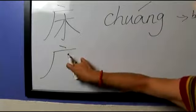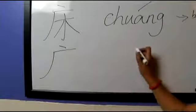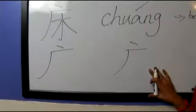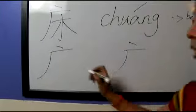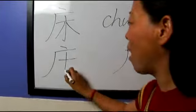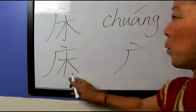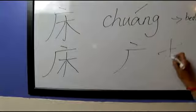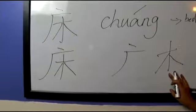Actually, this is also another word: chuang. Chuang means kind of huge or wide. And this part we have learned, which means mu — the wood.